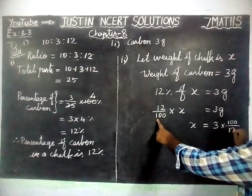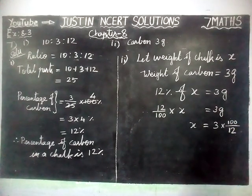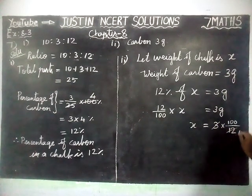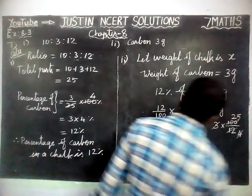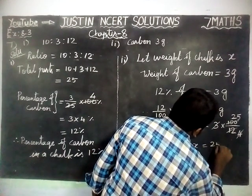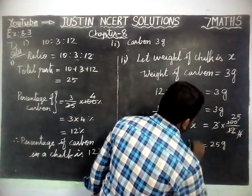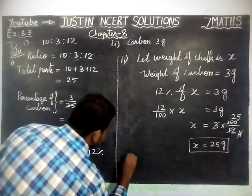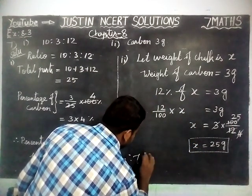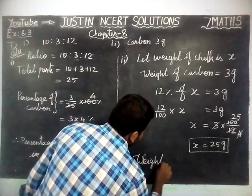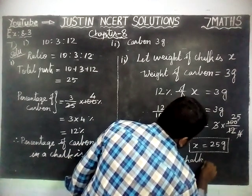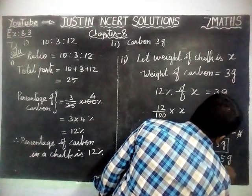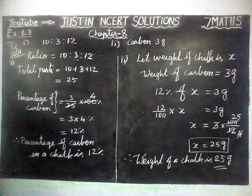We simplify: 3 into 100 divided by 12. 4 threes are 12, and 25 fours are 100, so x is equal to 25 grams. Therefore, weight of a chalk stick is equal to 25 grams.